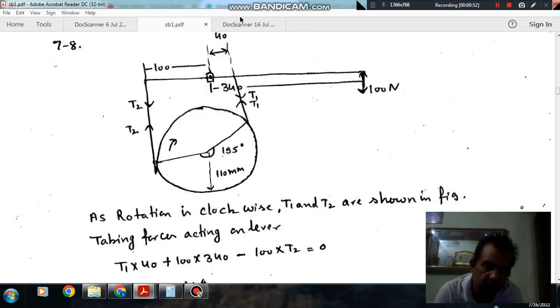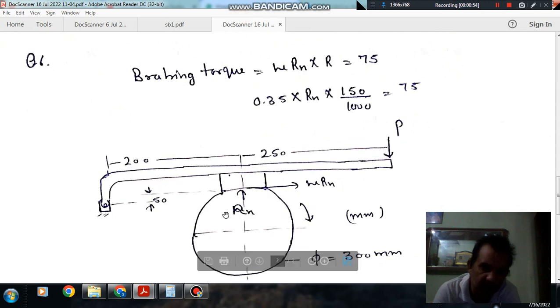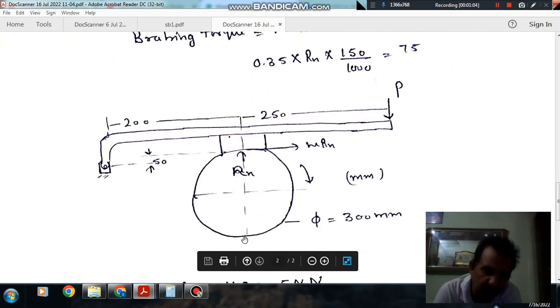This is the schematic figure showing the forces acting on the lever. Rn is the normal reaction applied by the drum on the brake. As it is rotating in clockwise direction, the shoe will have a relative motion.